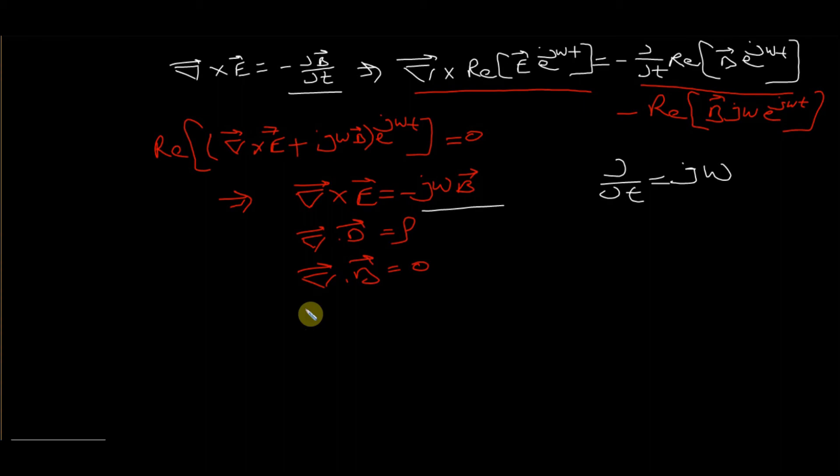So these are the equations in phasor form and time harmonic form. We have studied the different types of equations — the differential form, using divergence and Stokes' theorem — and then converted them into the phasor form and time harmonic form.